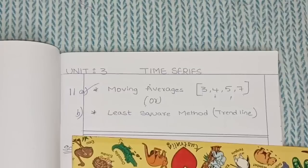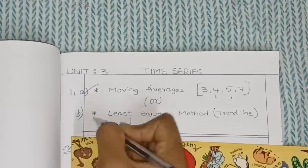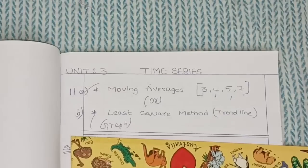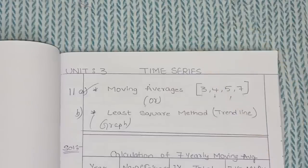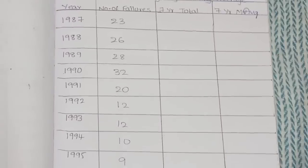Next, you will have the least square method or trend line, which is basically a graph representation. We will discuss how to do the graph representation in today's video. Now we will discuss moving averages — third, fourth, fifth, and seventh. We will start with the seven years moving average.